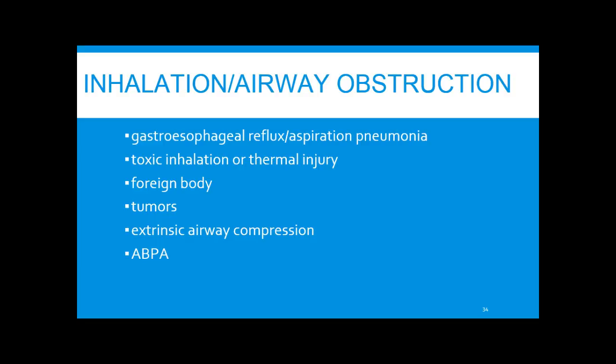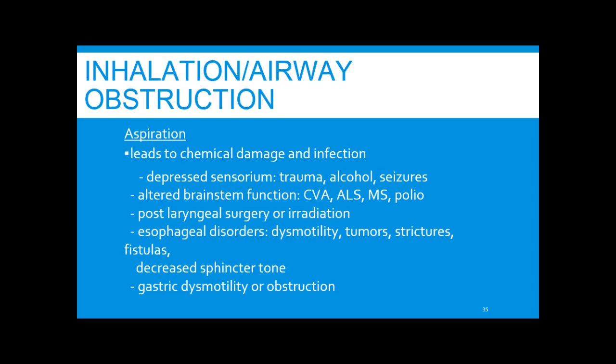Inhalation and airway obstruction are also causes. Any time patients have signs of aspiration, toxic injuries, or chemical pneumonitis, these can lead to bronchiectasis. Aspiration causes chemical damage and infection, propagating the inflammatory pathway. This is associated with depressed sensorium — trauma, alcohol, seizures — and anything affecting brainstem function such as strokes, ALS, and polio.